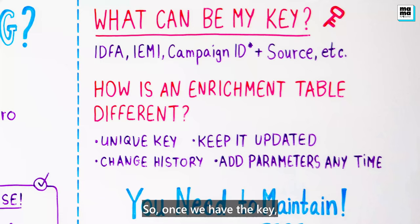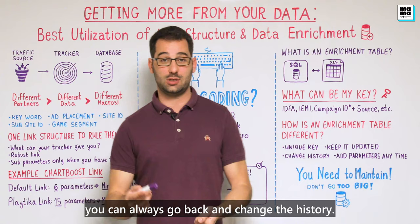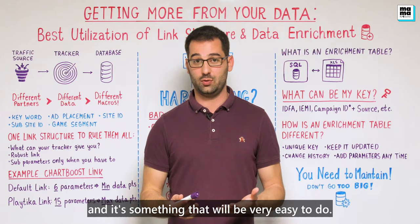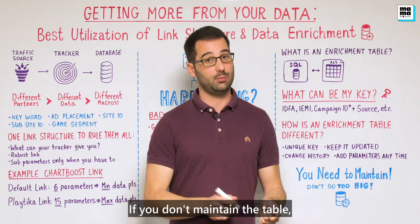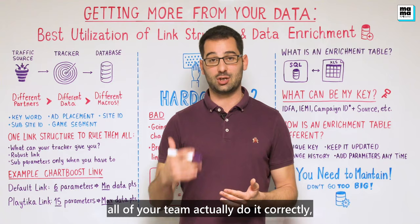Once you have the key, remember the advantages and problems with enrichment tables. The advantages are that you can always go back and change history, always add more columns, always add more data — it's very easy to do. The disadvantage is that you have to maintain it. If you don't maintain the table, you cannot keep the data correct. So don't go too big or too crazy — the important thing is to have everything maintained and have all of your team doing it correctly.